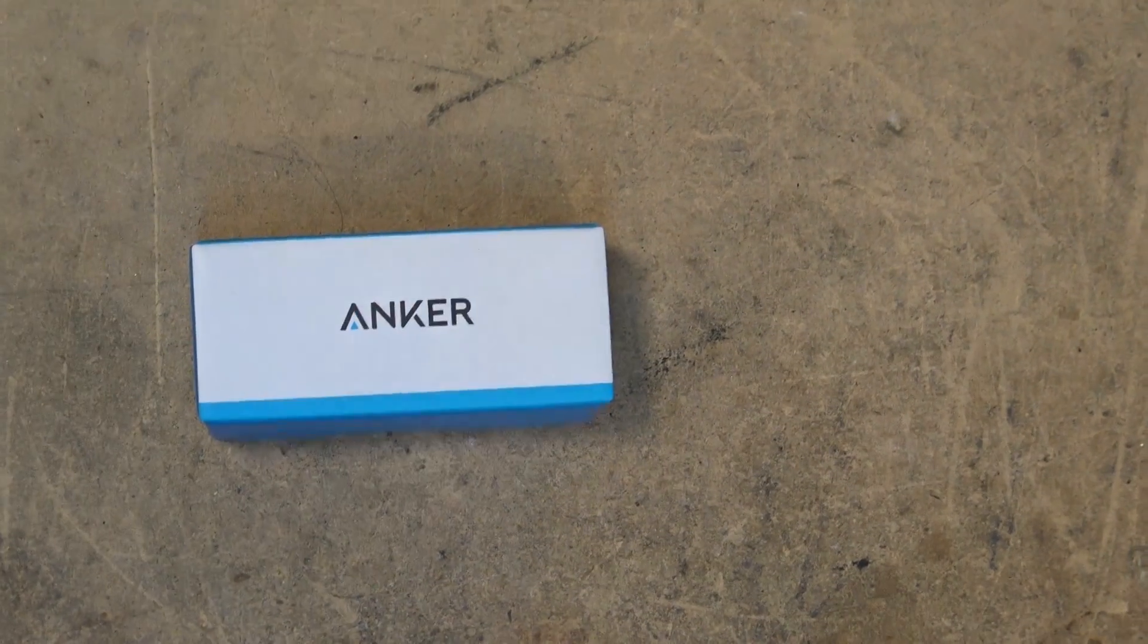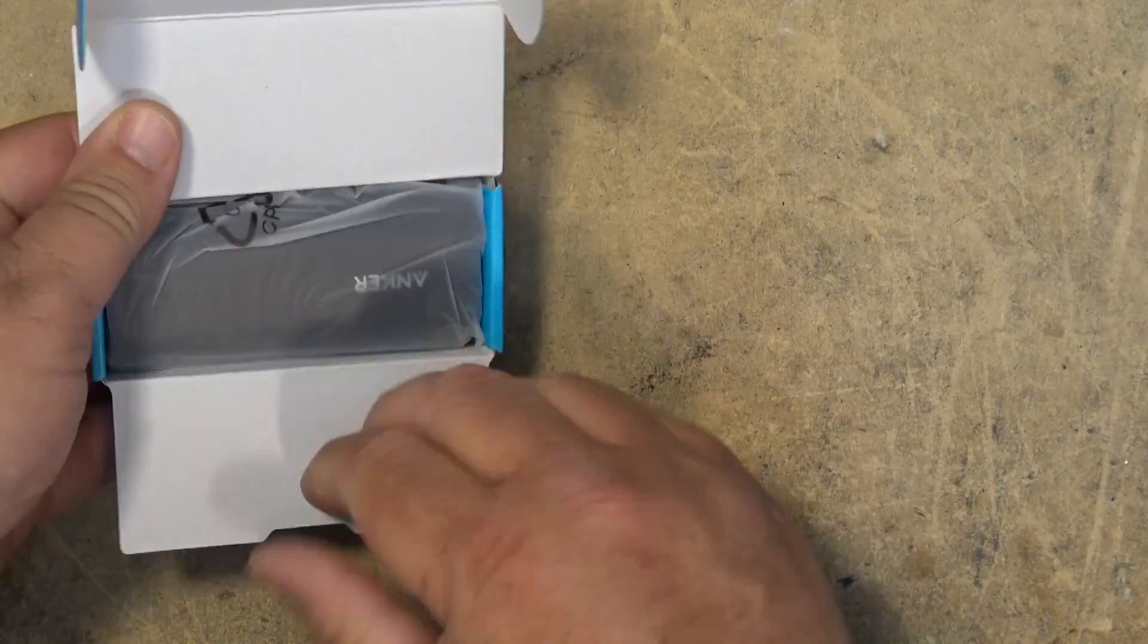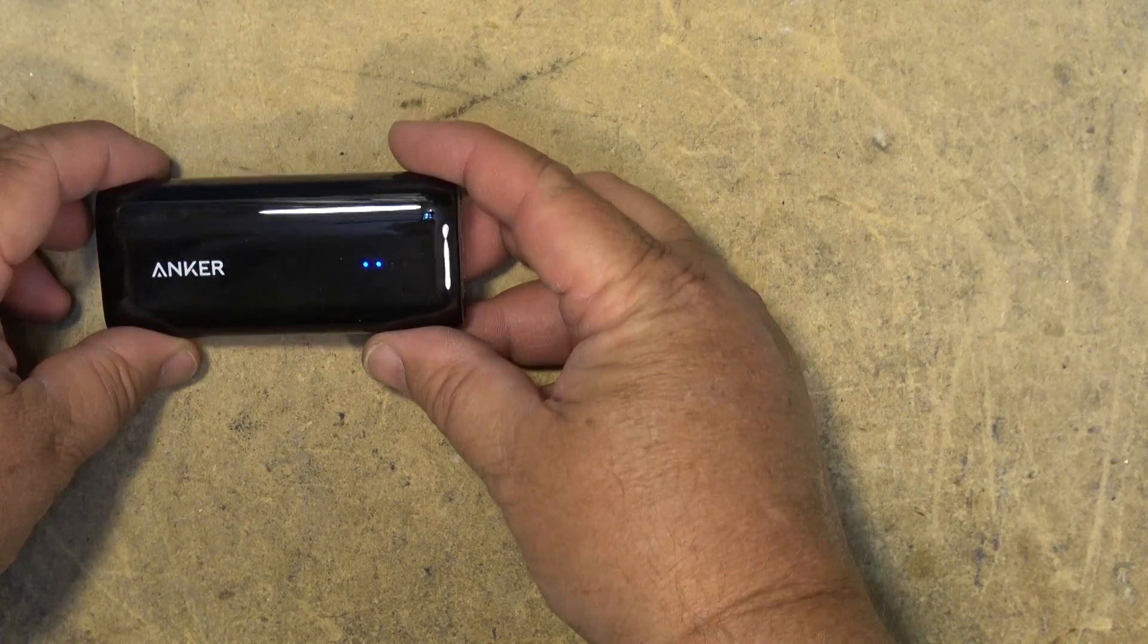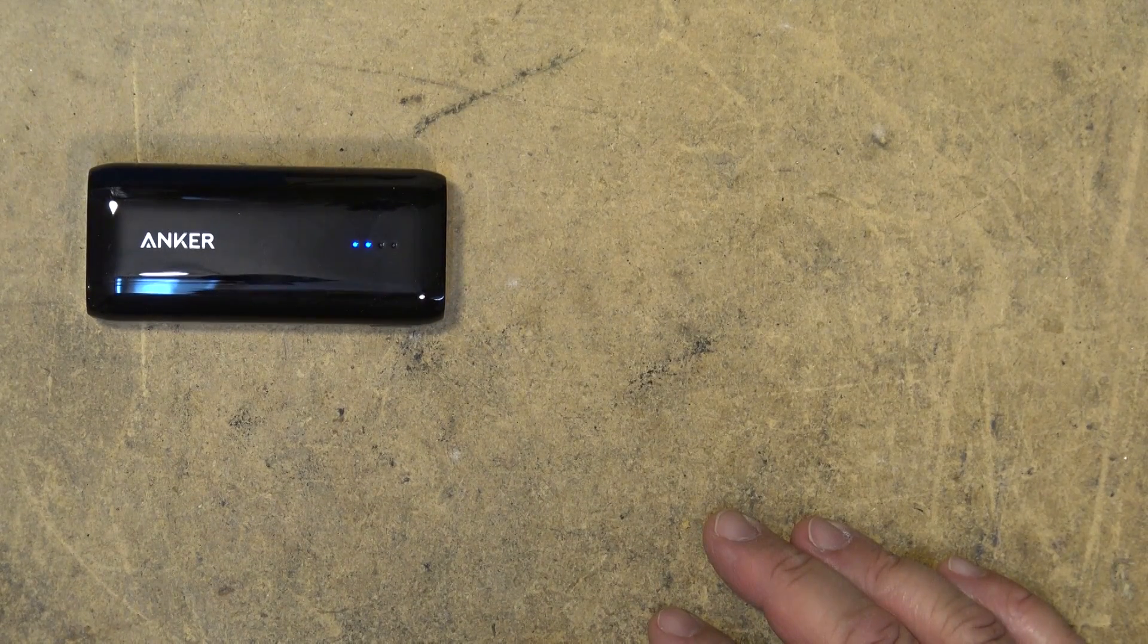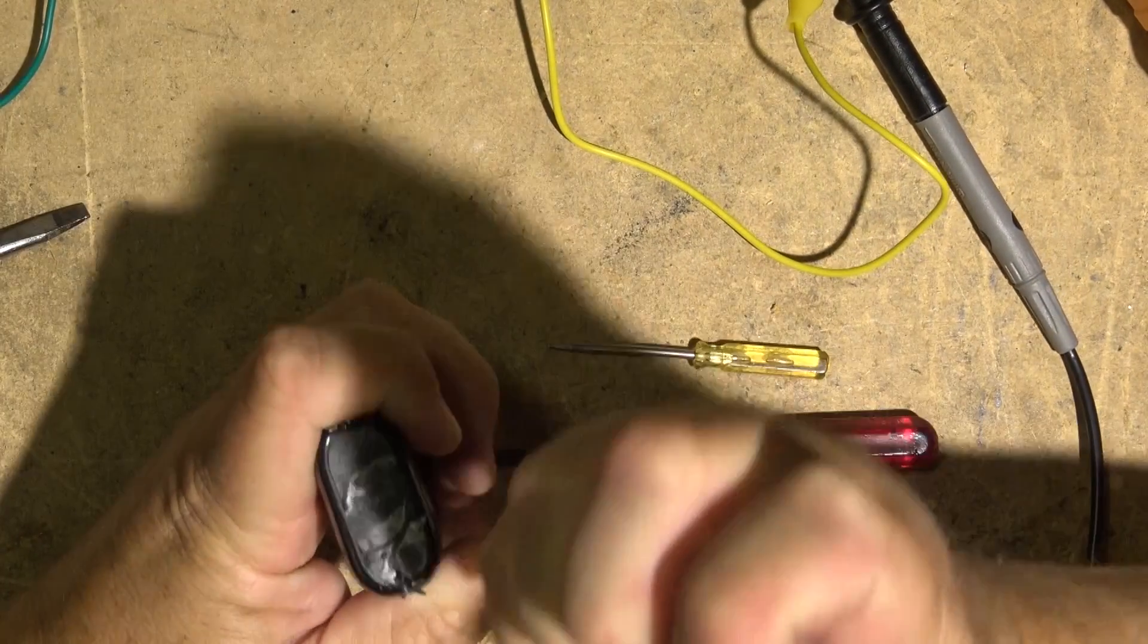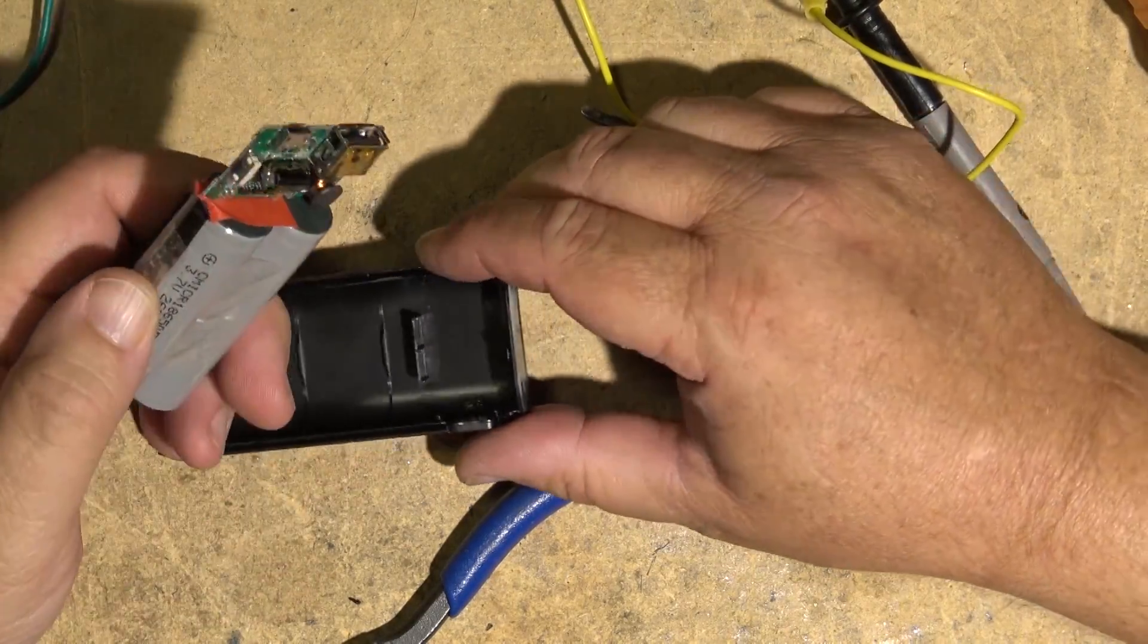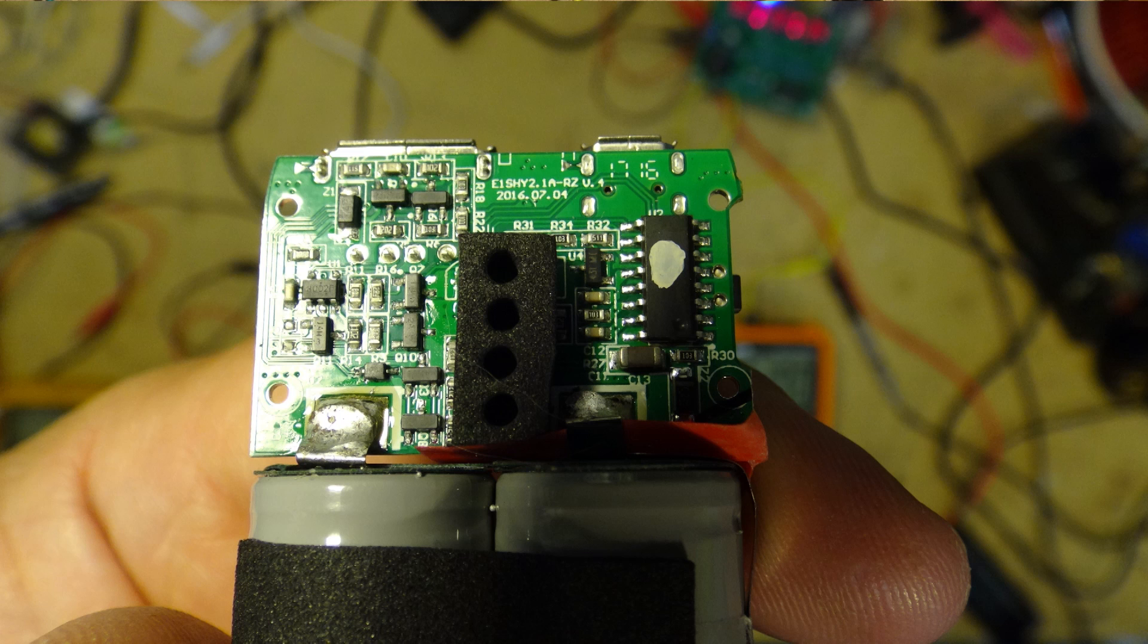This one's the Anker Astro E1, model A1211. It's a 2 amp output, rated at 5200 milliamp hours or 19.24 watt hours, whereas the RAVPOWER we just looked at was rated at 6700 milliamp hours or 24.79 watt hours. Let's see whether we can pry this open. There we go, let's take a look at what's inside this thing.